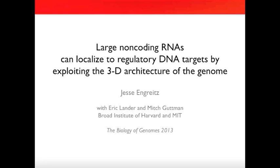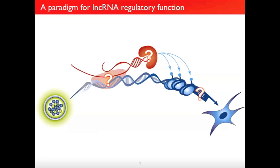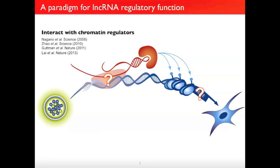Over the last few years, our lab and many others have begun to catalog the diverse functions of lncRNAs. We found that many are involved in controlling maintenance of pluripotency in stem cells, controlling cellular differentiation, or even in causing human disease. An emerging paradigm for how lncRNAs accomplish this diverse array of functions is that they act at the level of chromatin. Many lncRNAs have been demonstrated to interact with chromatin regulatory complexes and to regulate specific gene expression programs.